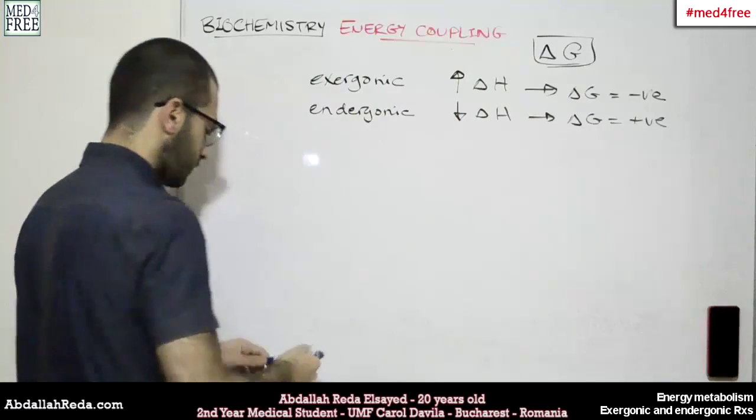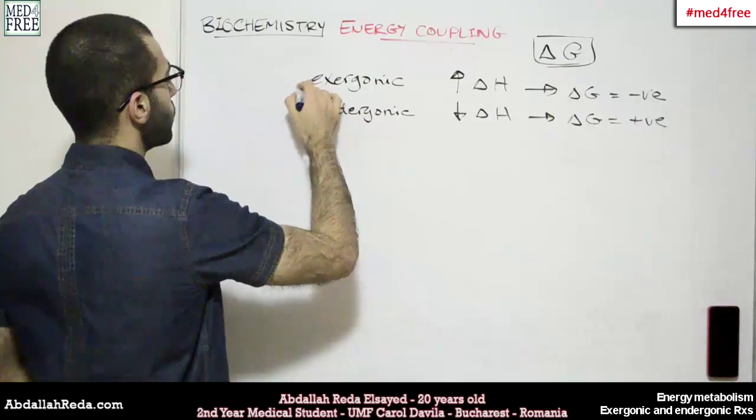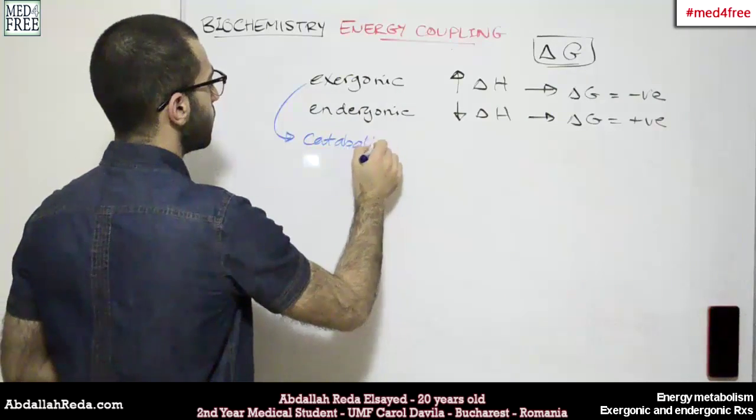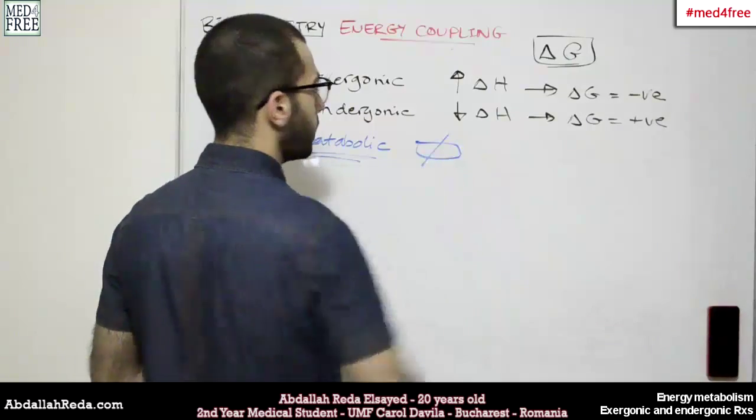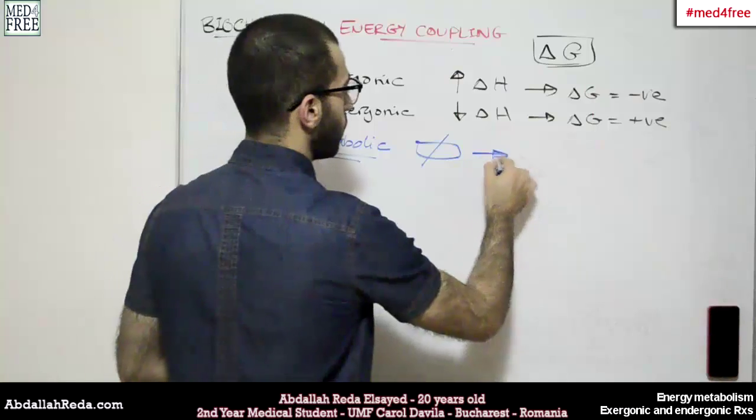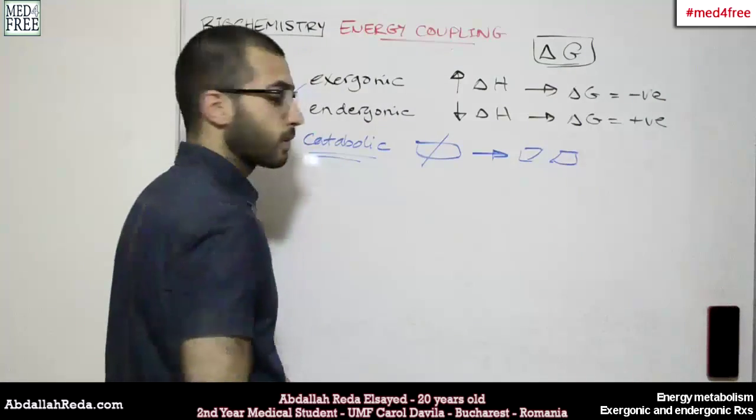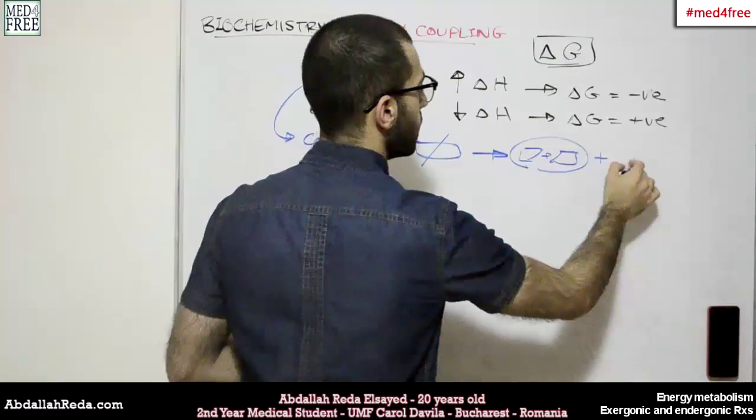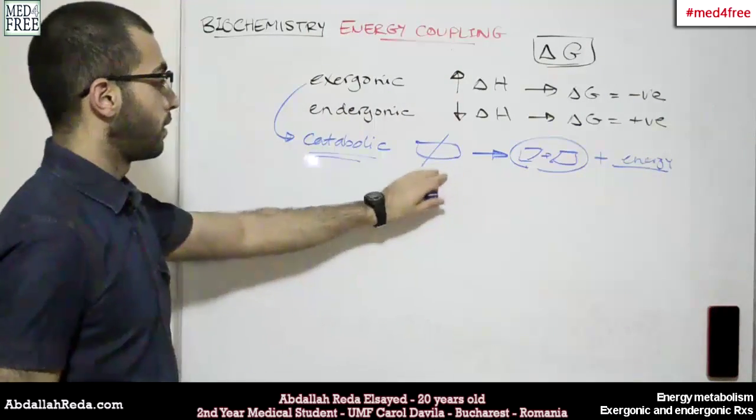And we also said that this is because exergonic reactions are usually catabolic reactions. And catabolic reactions break chemical compounds in order to produce two or more separate compounds. And in this process we will have the products plus energy release, because it breaks down the compound.